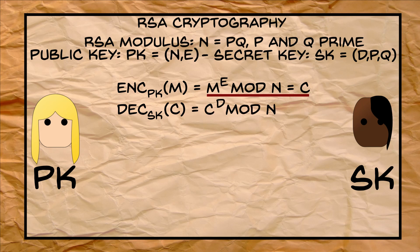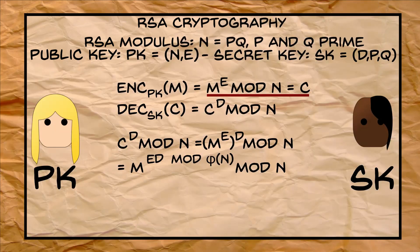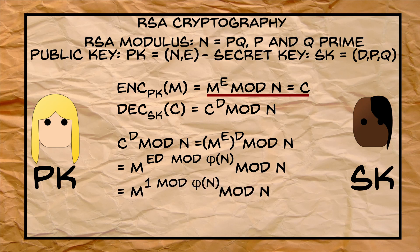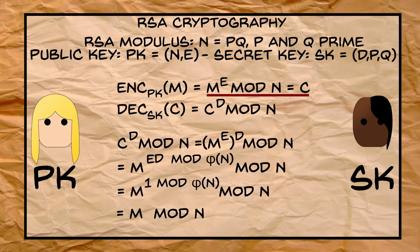But we know from encryption what c is. c to the power d modulo n is m to the power e modulo n to the power d modulo n, which is the same as m to the power e times d modulo n. But, by Euler's theorem, m to the power e d modulo n equals m to the power e d modulo phi of n modulo n. And as e times d equals 1 modulo phi of n, we get the final equality of m modulo n.